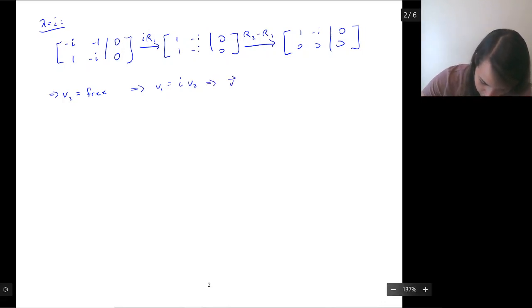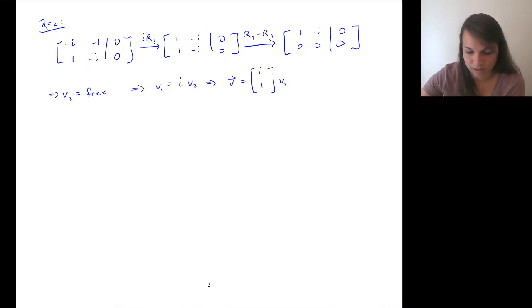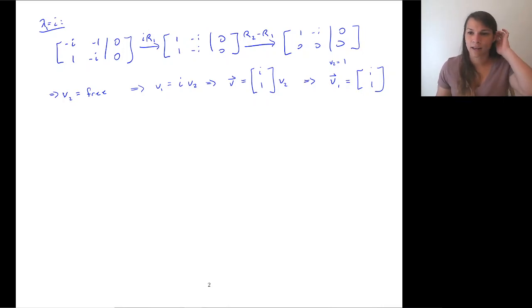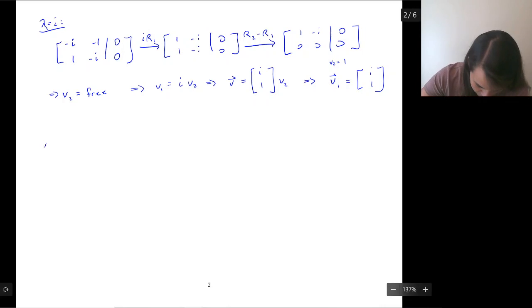Okay, thank goodness, they don't look terrible. So then, row 2 minus row 1, that's now super easy. 1, -i, 0, 0, 0. Okay, so we got to a place. This is a thing. We're fine. Let's figure out what v is. So v₂ is free. So then, v₁ is equal to i times v₂. So far, everything's okay.